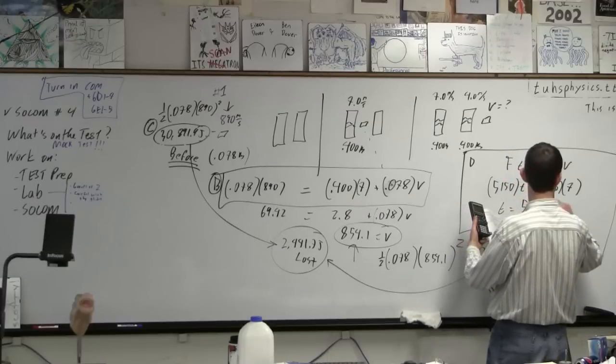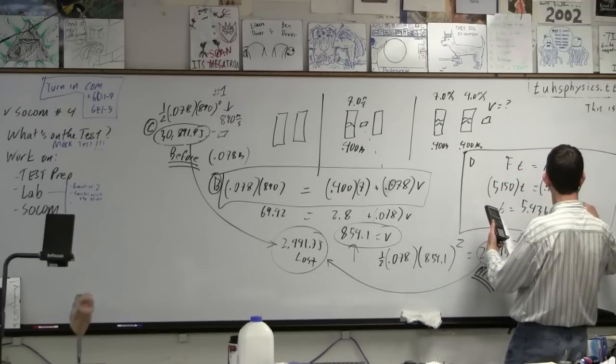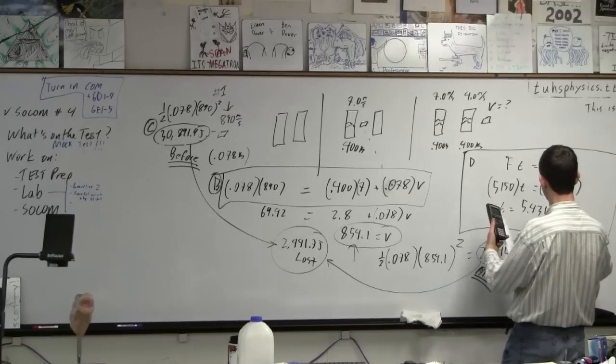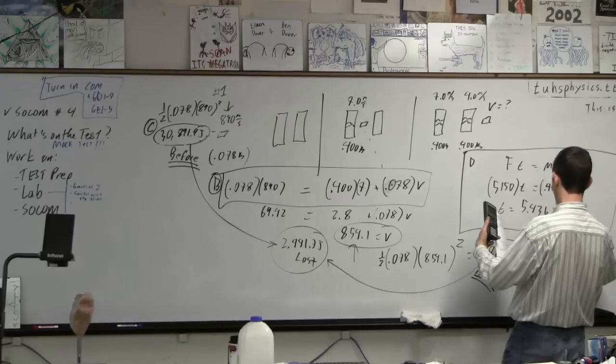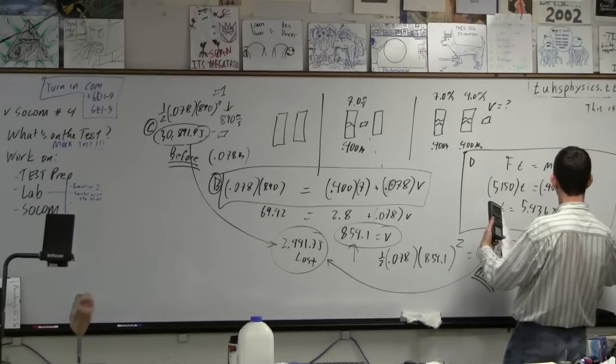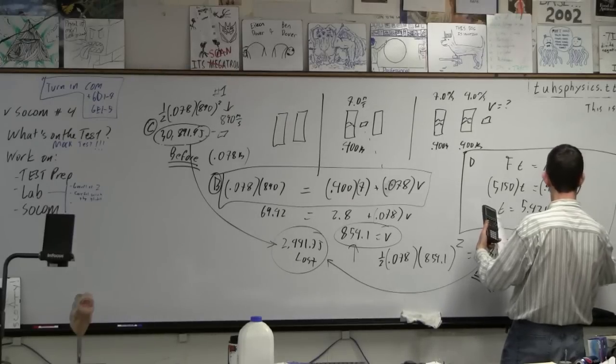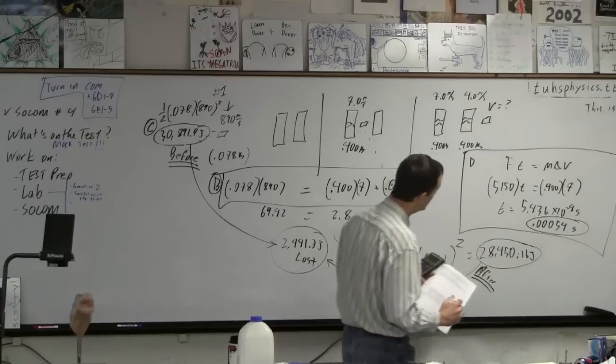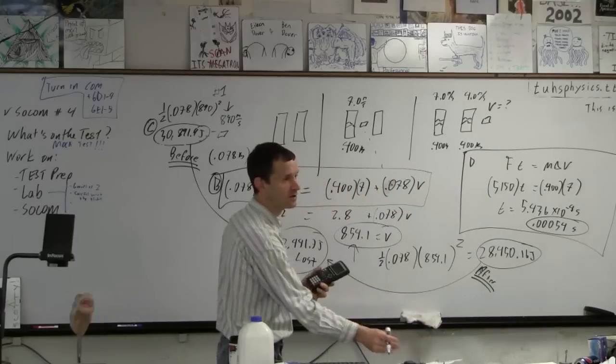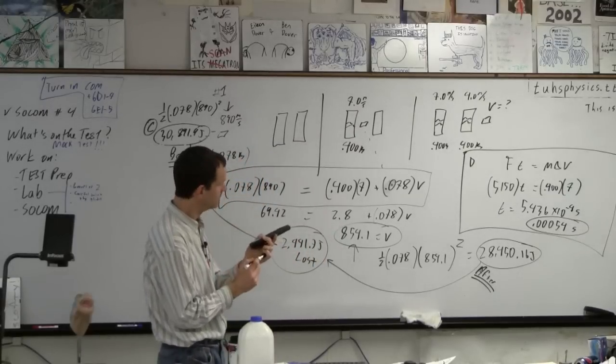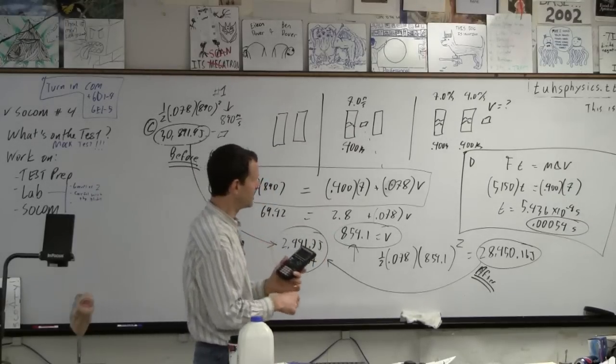5.436 times 10 to the minus 4th seconds, which is 0.00054 seconds. Yeah? Generally, 3 zeros is like the limit of polite amounts of zeros. 2 is really polite.